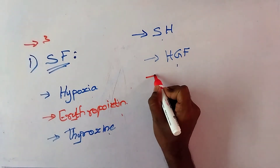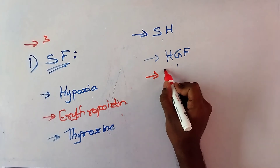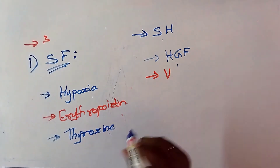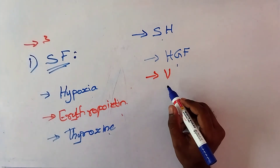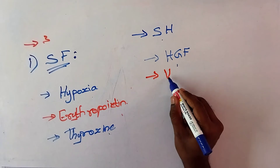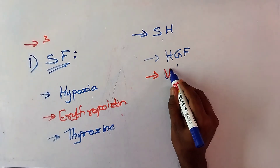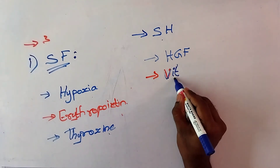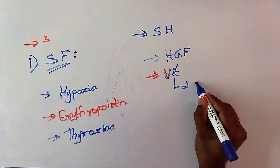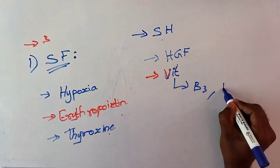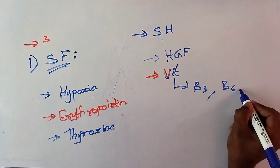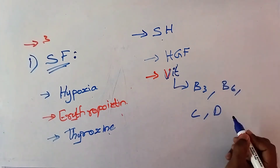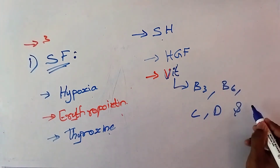The sixth stimulating factor of erythropoiesis is vitamins. Here, five vitamins mainly act on the formation of erythropoiesis: B3, B6, C, D, and E.